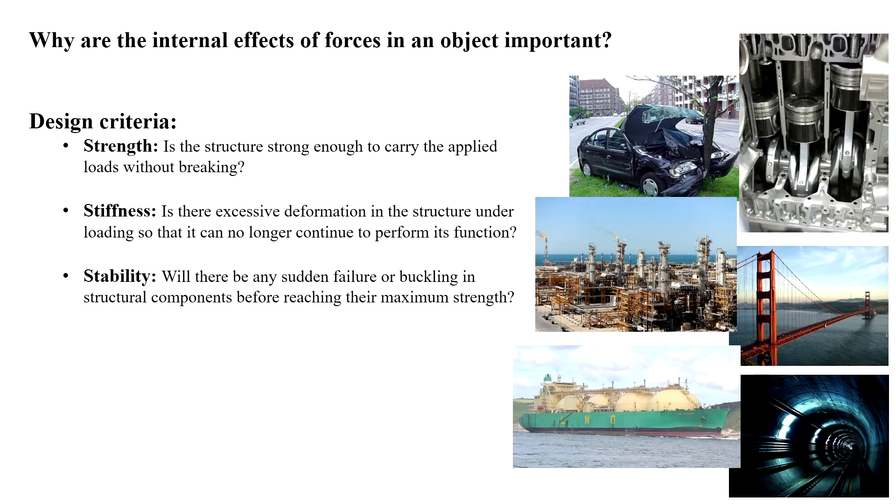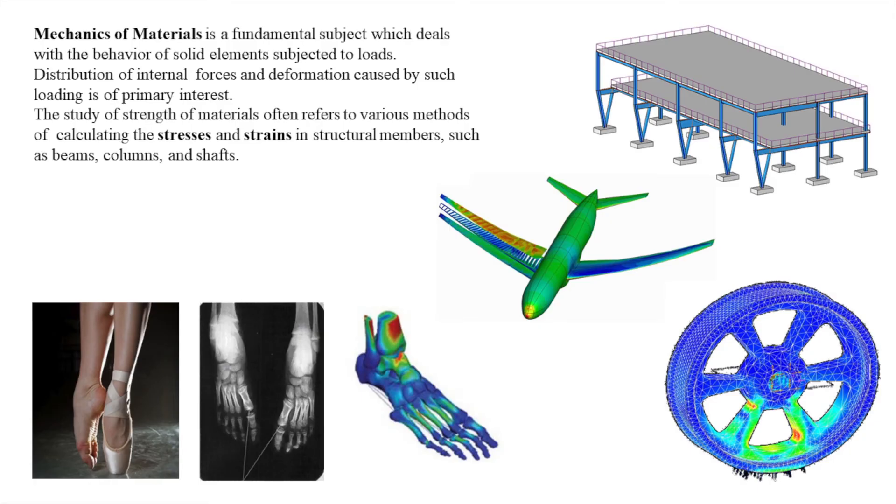In order to design structural components based on strength, stiffness, and stability criteria, engineers need to know how much are the forces in each component and how a body behaves when forces are applied, which is primarily discussed in mechanics of materials. The distribution and intensity of internal forces, which is called stress, and internal deformation, known as strain, are of primary interest.